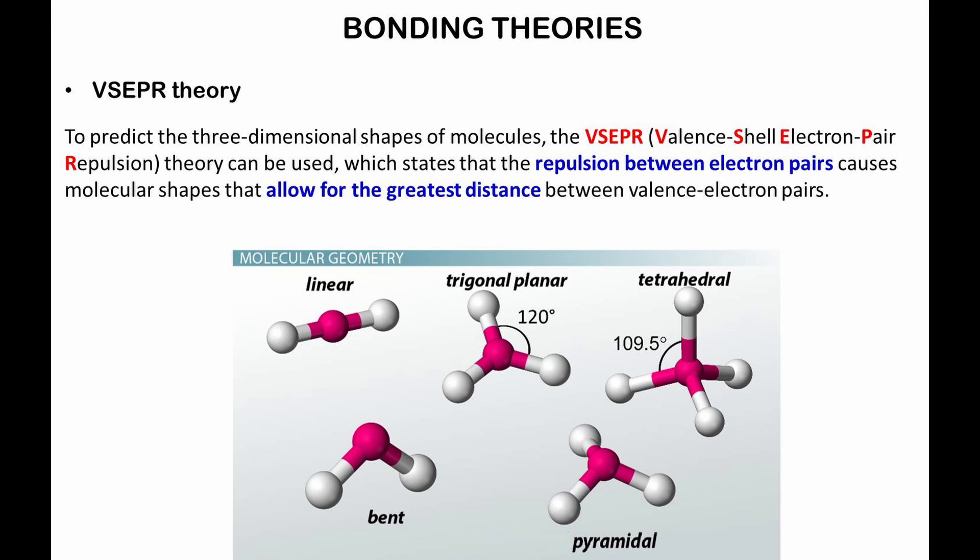To predict the three-dimensional shapes of molecules, the VSEPR, which stands for valence shell electron pair repulsion, theory can be used, which states that the repulsion between electron pairs causes molecular shapes that allow for the greatest distance between valence electron pairs. In the figure below, five common molecular shapes are shown.